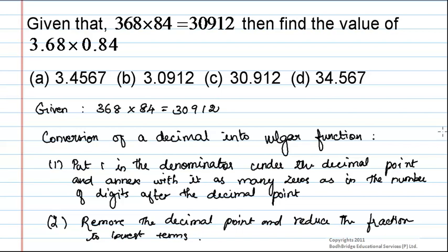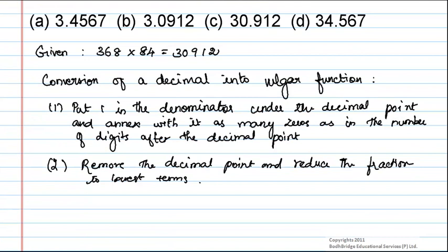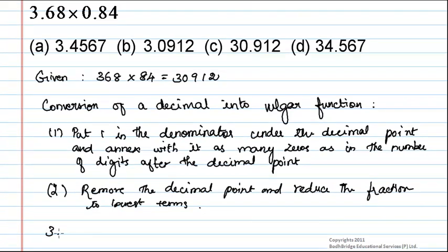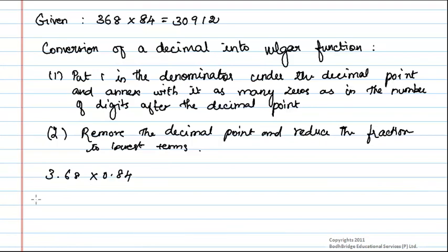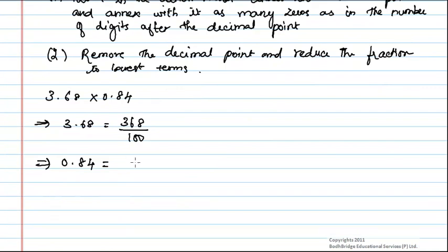Now, we can apply these two steps here. We have to find 3.68 into 0.84. Here, 3.68 can be written as 368 divided by 100, and 0.84 can be written as 84 divided by 100.